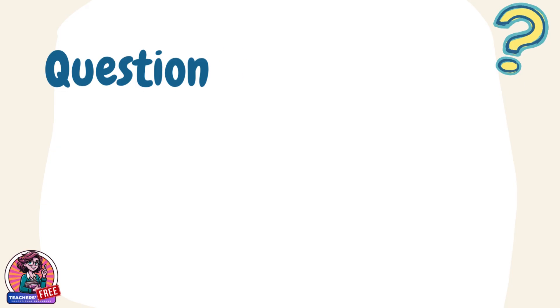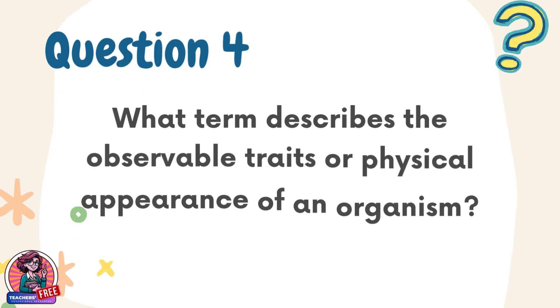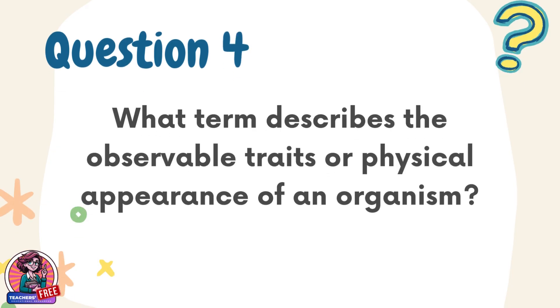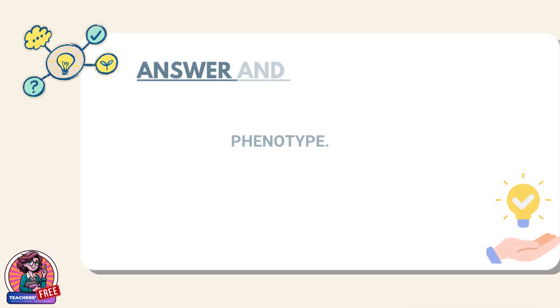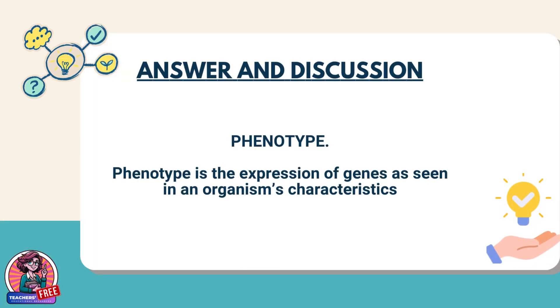Question 4. What term describes the observable traits or physical appearance of an organism? Answer: Phenotype. Phenotype is the expression of genes as seen in an organism's characteristics.